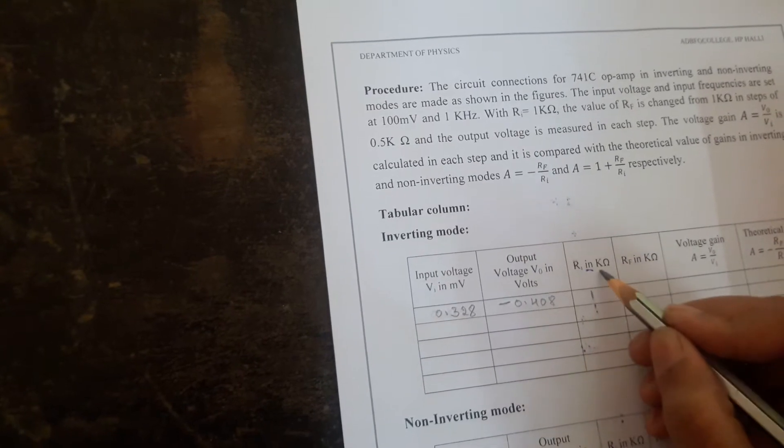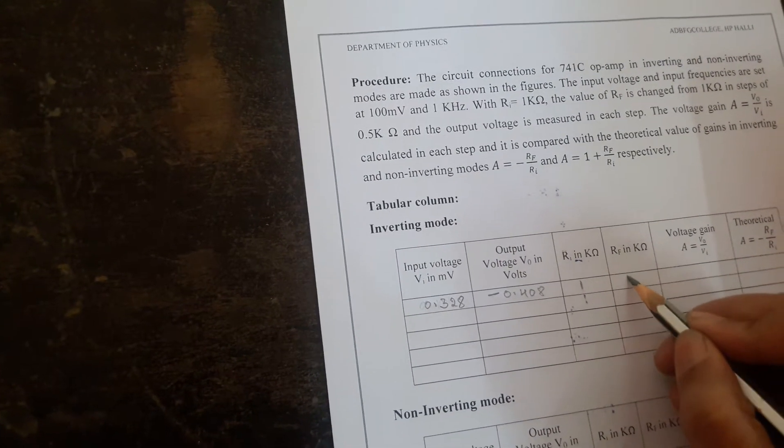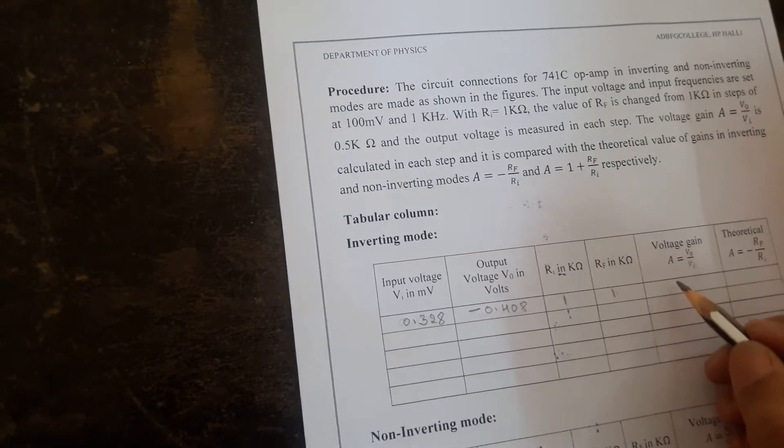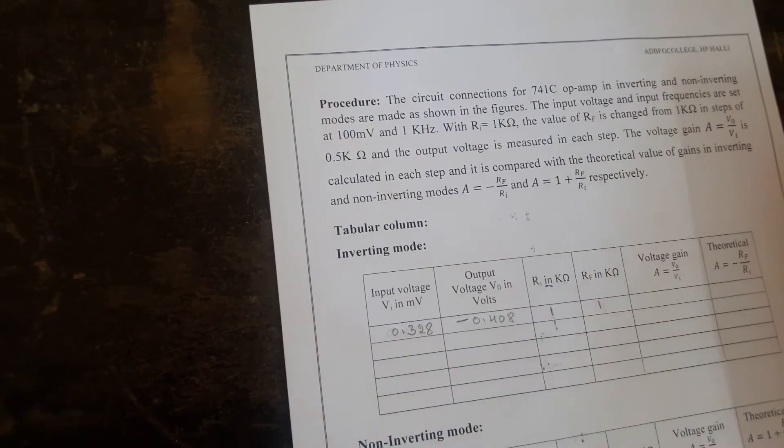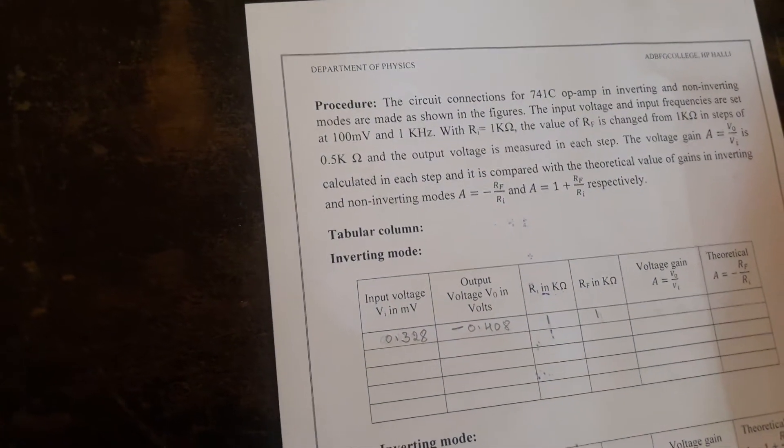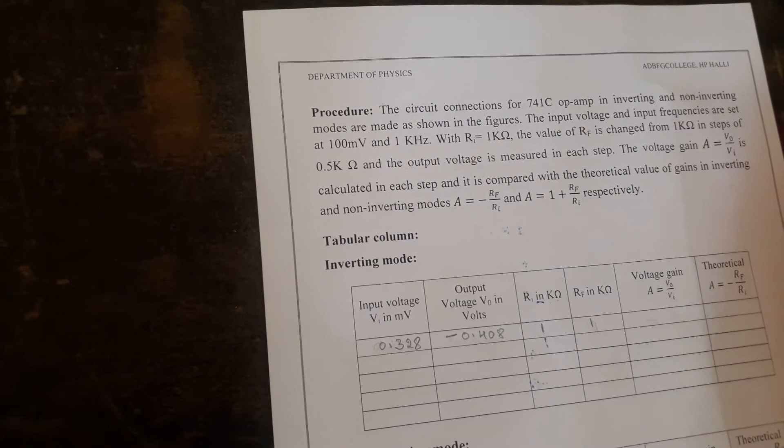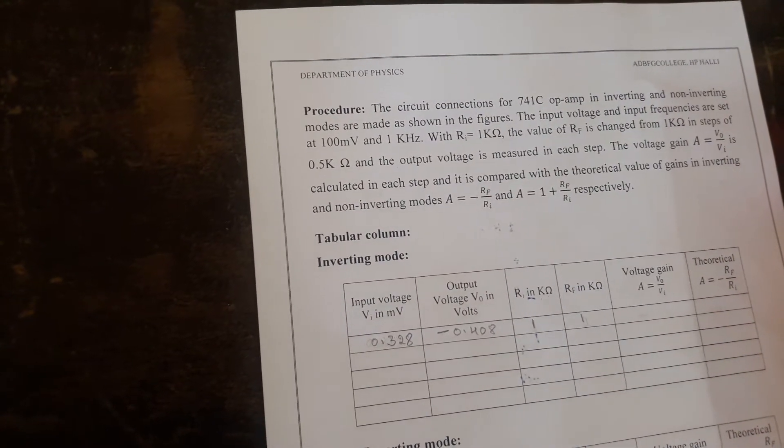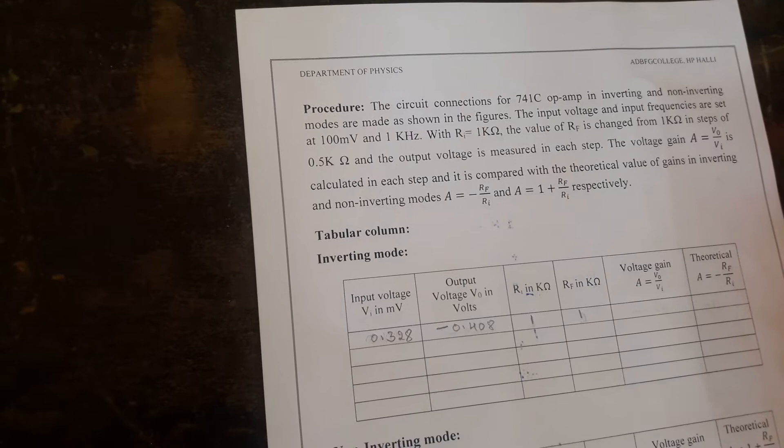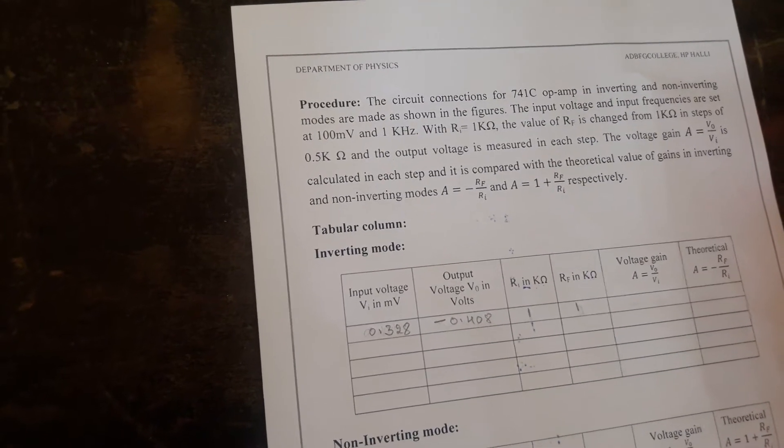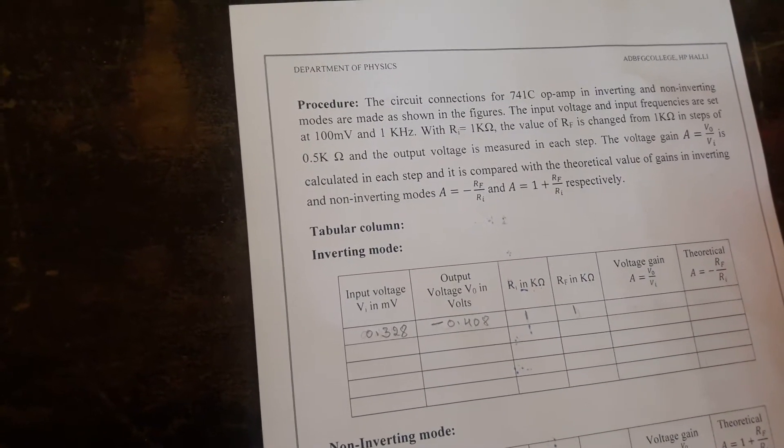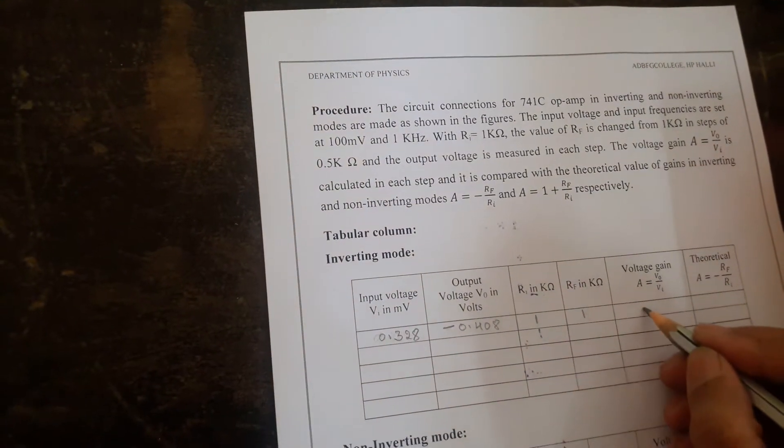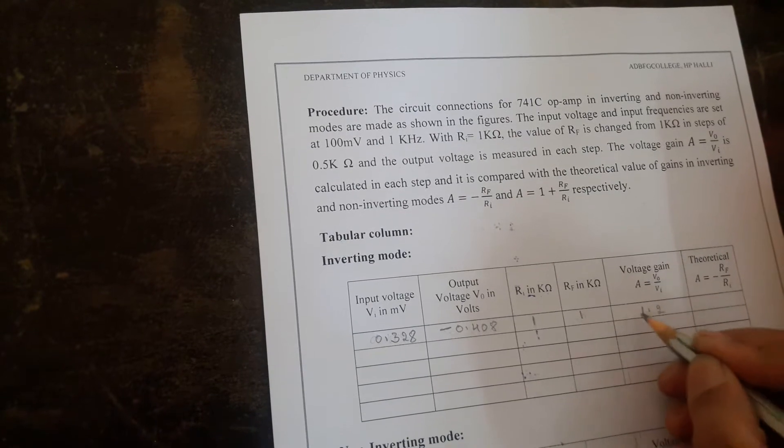Input resistance we have taken it as 1 kilo ohm and feedback resistance also we have taken as 1 kilo ohm. Gain is the ratio of output to the input. So this is nothing but 0.408 divided by 0.328.